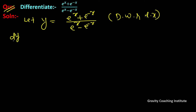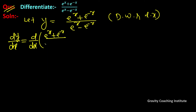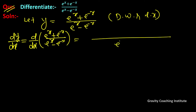So dy/dx equals the derivative of (eˣ + e⁻ˣ) / (eˣ - e⁻ˣ). इसमें quotient rule लगेगा। Quotient rule के according इसको लिख सकते हैं, with (eˣ - e⁻ˣ) whole square in the denominator।